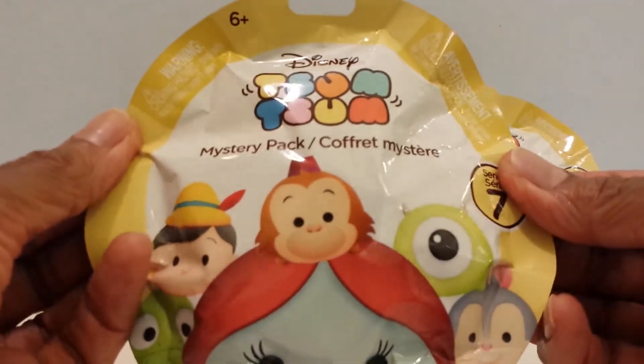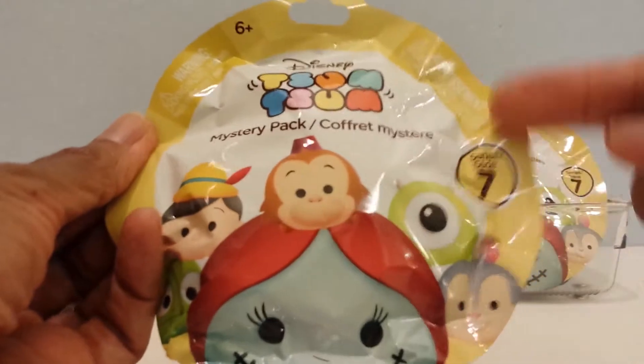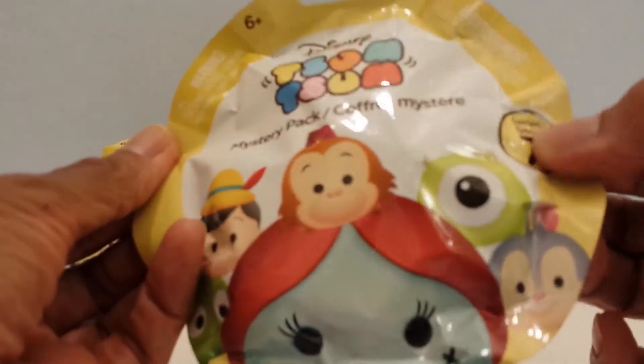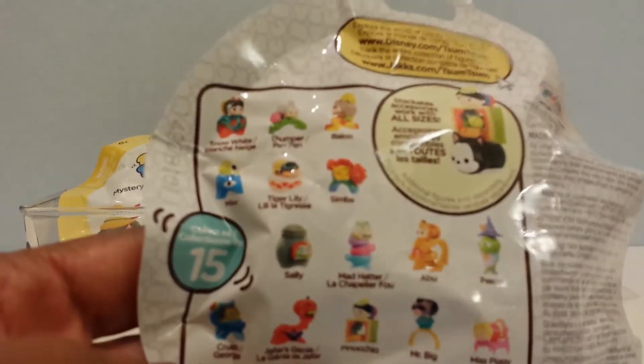This is the front of the bag, this is how it looks and you see some of the characters that are in it, Series 7. And then on the back, let's see if we can call off these ones.